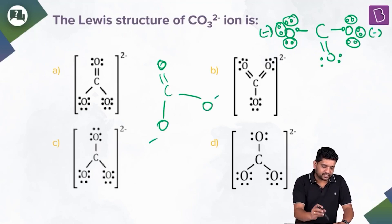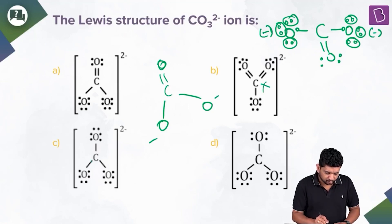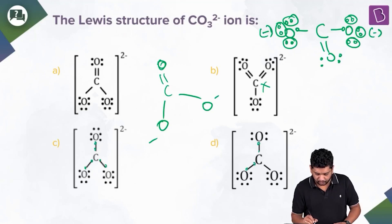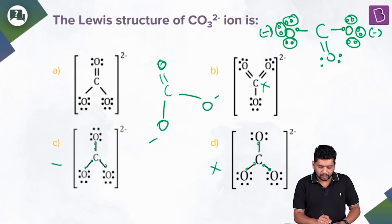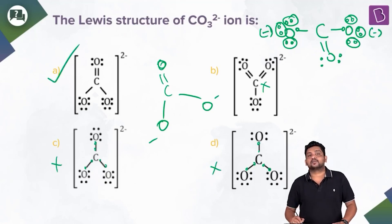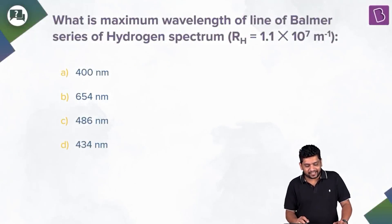Looking at the options: in option B, carbon has five bonds — not possible. In option C, carbon only has six electrons after bonding and there is no negative charge assigned, so carbon's octet is not satisfied. These are wrong. The correct structure is option A.